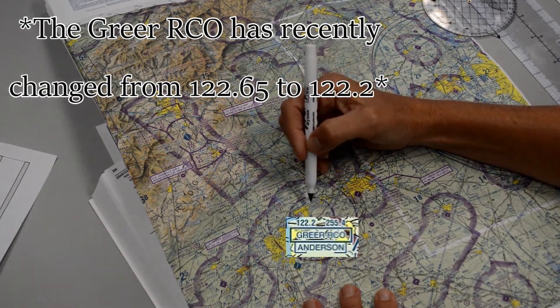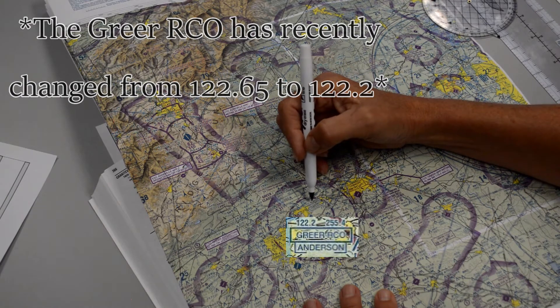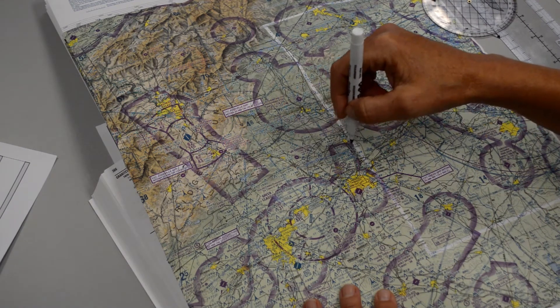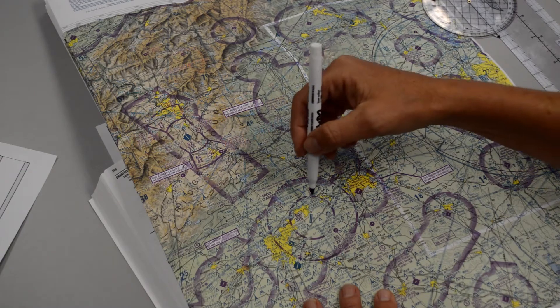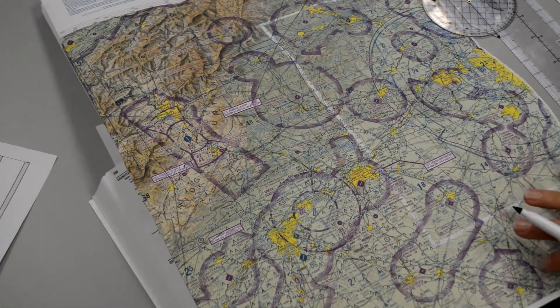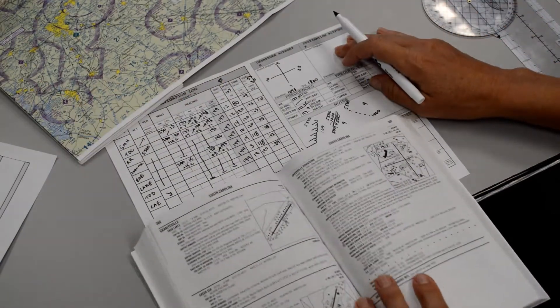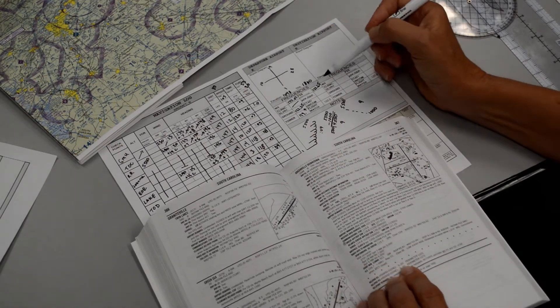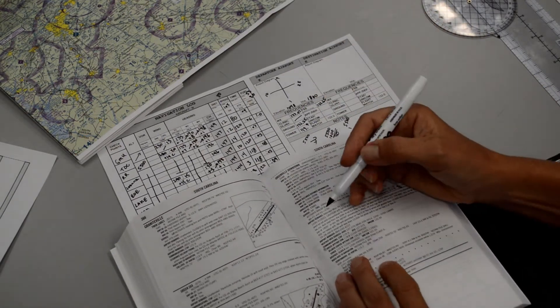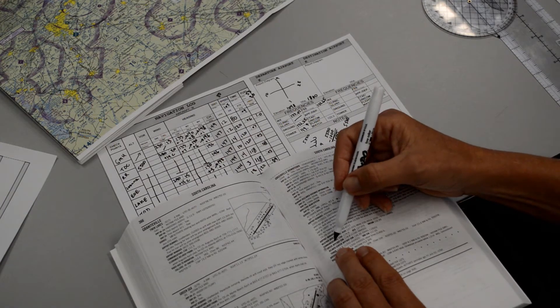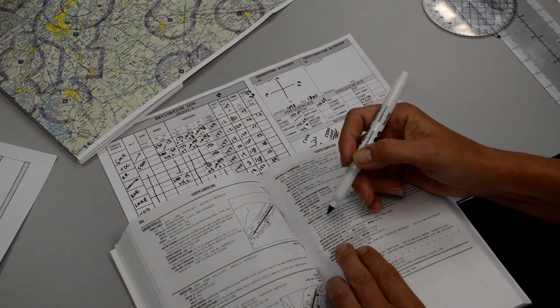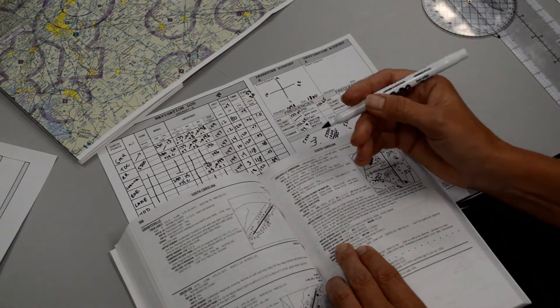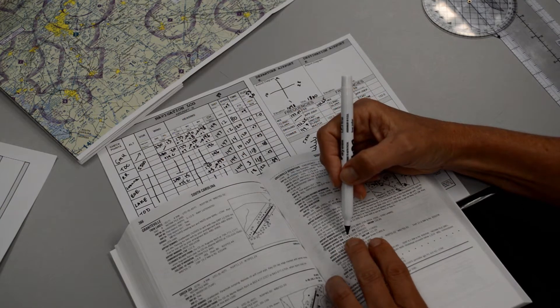They call this an RCO, so this is Greer RCO, which means Remote Communication Outlet. They're just saying that there's another frequency available in our area that we can use. So we could call up Anderson Radio on 122.65, or we could try them from this other VOR, other frequency that's on the Spartanburg VOR. But this one's closer, so I would be apt to try that one first. So 122.65 is what we want to write down.